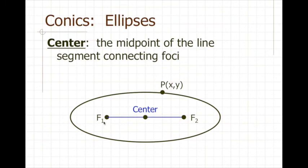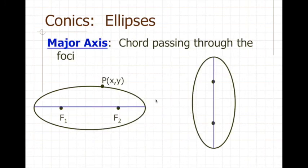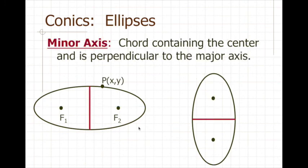Ellipses, in addition to having two foci, also have a center, and the center is defined as the midpoint of the line segment containing the two foci. We're going to need that when we write equations later. Next we have the major axis, which is a chord passing through the foci — it's the longest axis of the ellipse. In contrast, we have the minor axis, which is the chord containing the center and perpendicular to the major axis, and it is the smallest chord you can draw in the ellipse.